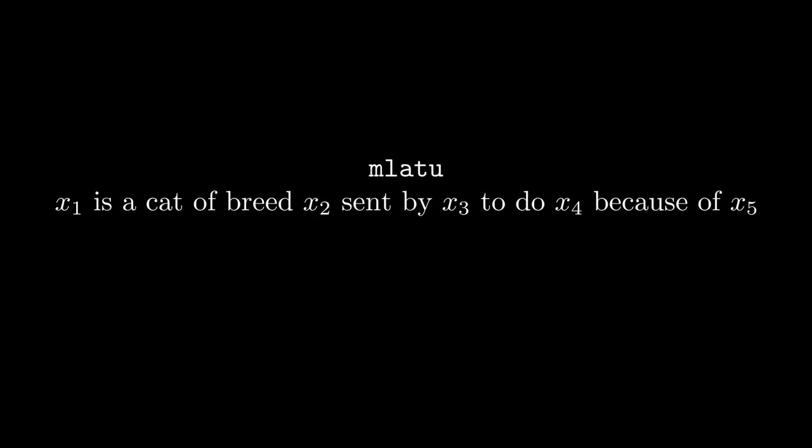In the first video I mentioned a system for adding arguments to relations with an example: 'I am a cat sent by the authorities in order to arrest you for crimes against the internet.' Now it sure would be convenient if Mulatu had a position structure for this — X1 is a cat of breed X2 sent by X3 to do X4 because of X5. Alas, we don't have that, nor would we want that.